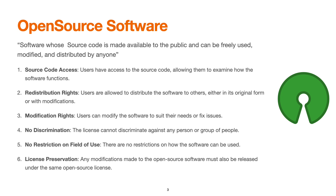Open source software is software whose source code is made available to the general public. Typically used by developers, they can download the code, modify it, use it, and even distribute it to anyone. Key characteristics include source code access — users and developers have access to the source code — and distribution rights, where users can modify the source code without any written agreement and are free to redistribute and modify the software.